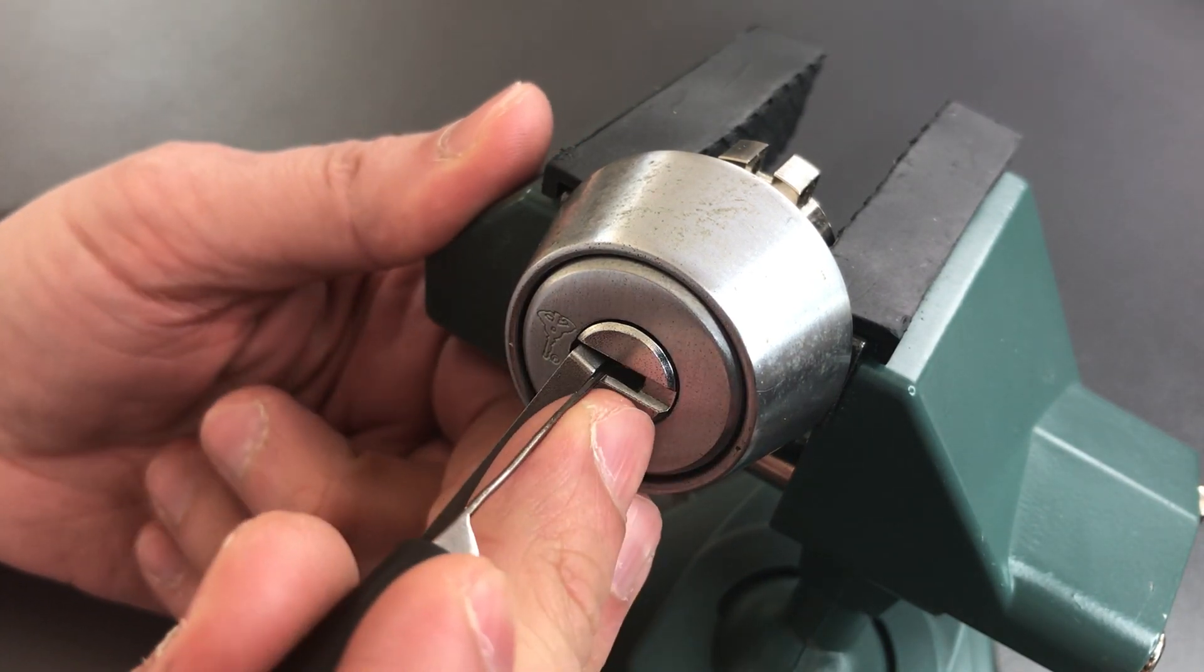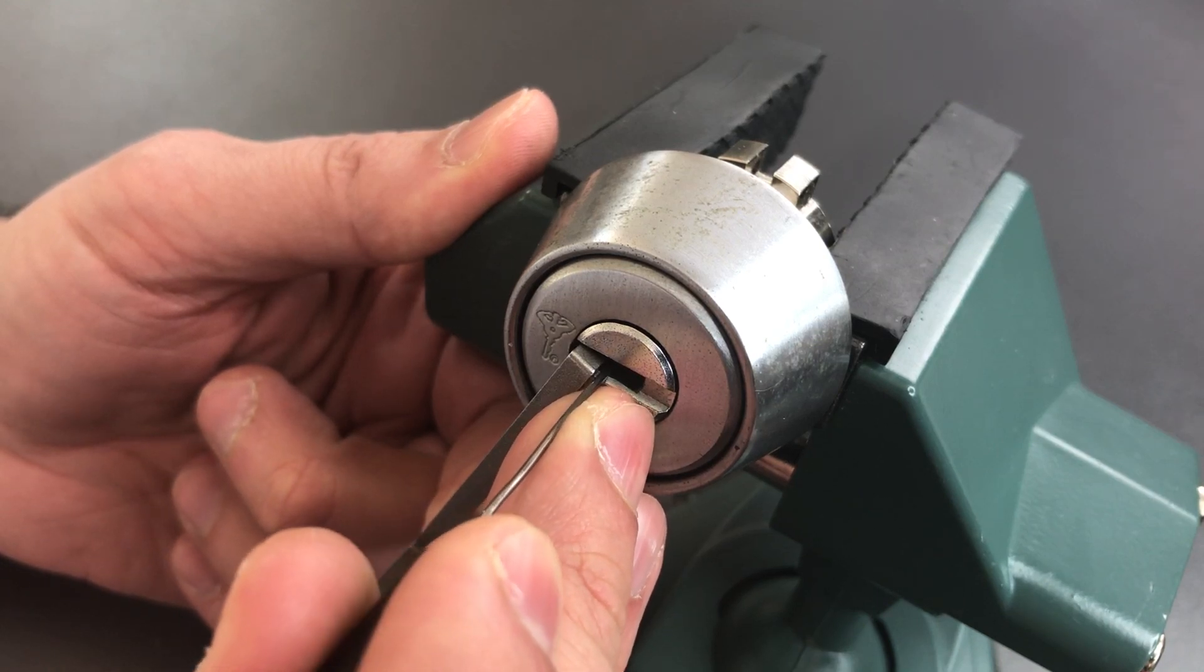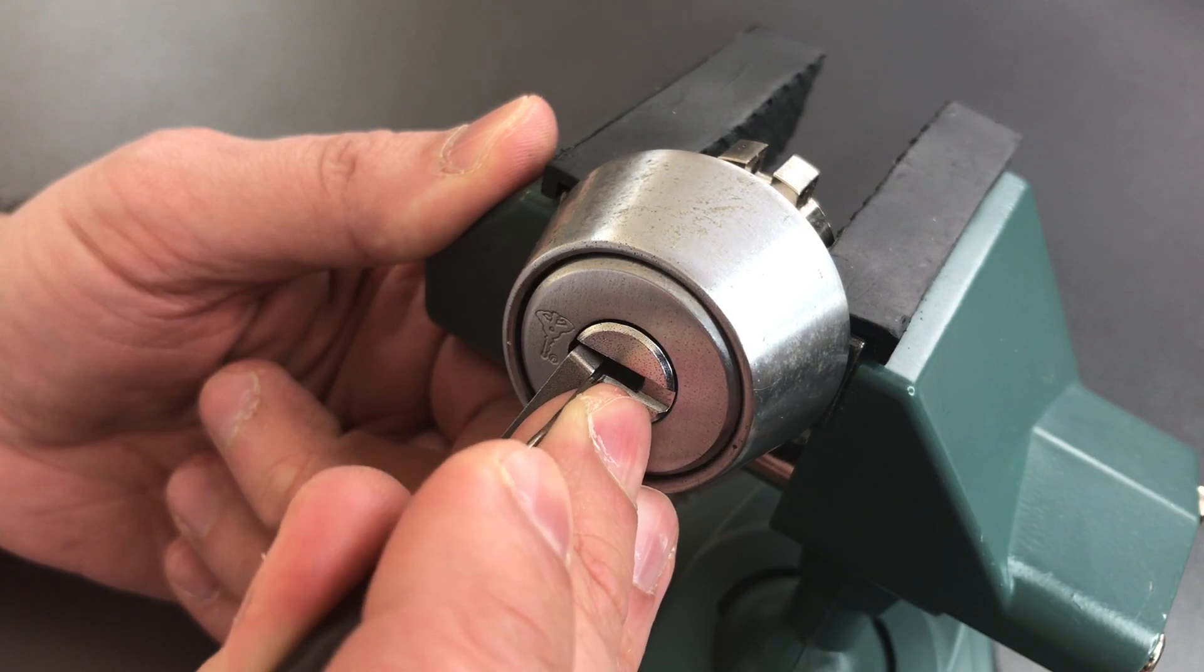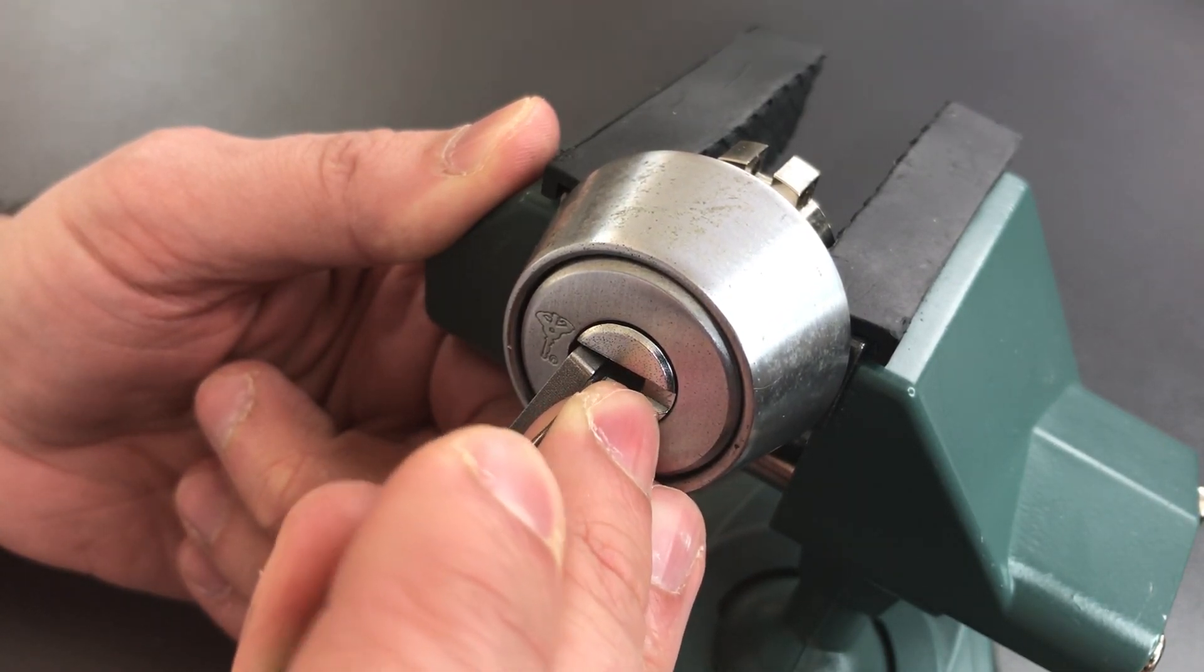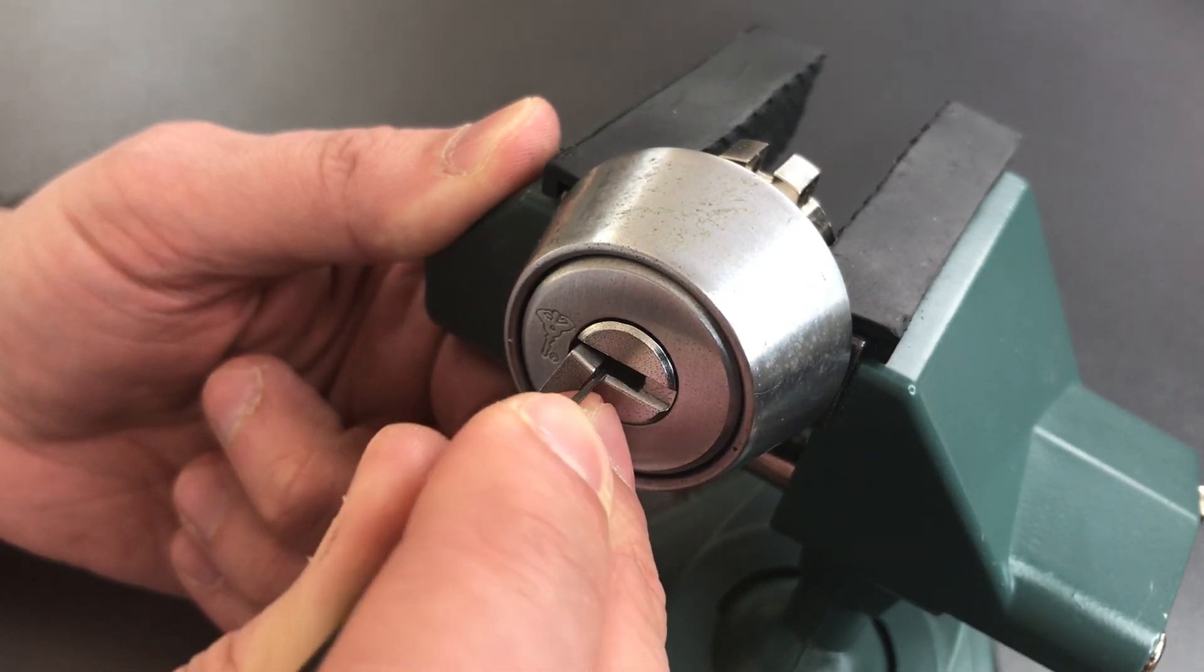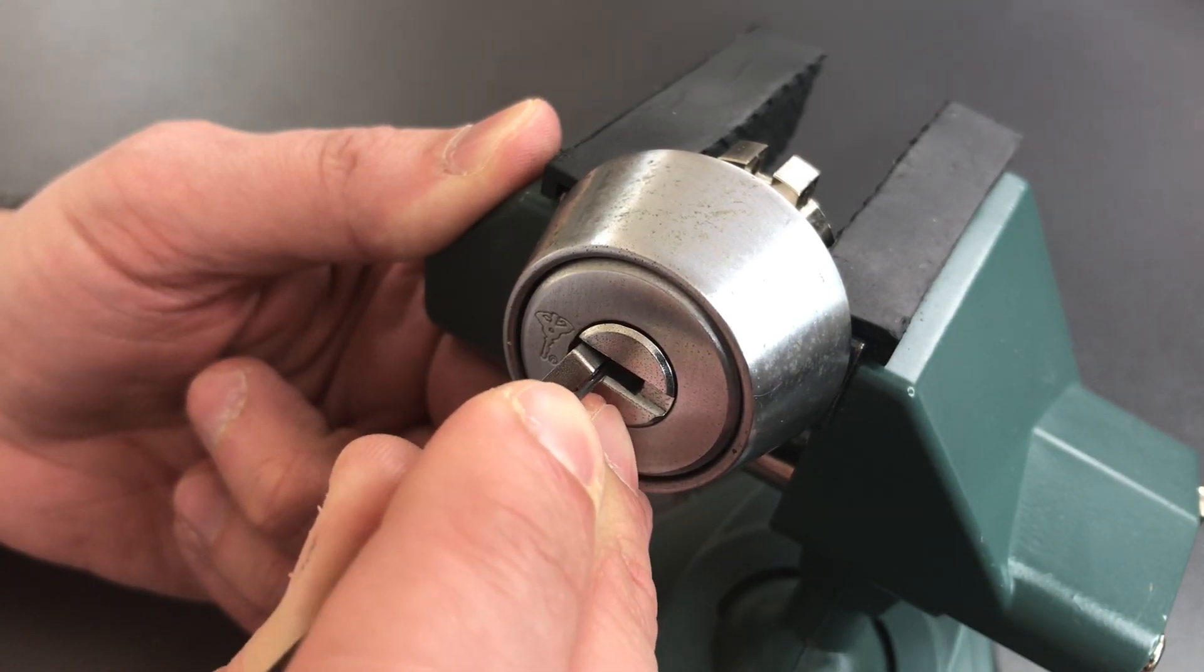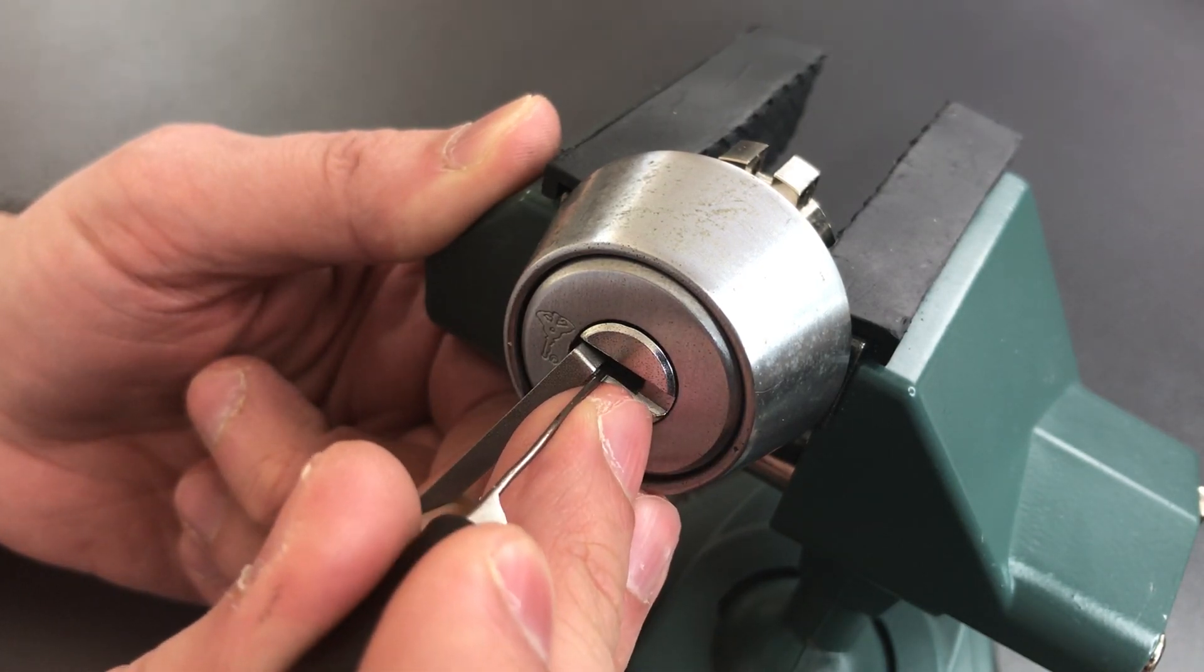Let's start picking. I am looking for binding outer pins, and I got one on number one, nothing on two, number three is binding, click there, number four, got a click out of the outer pin there, and five, binding tightly, and I clicked on that and we got a little bit of movement on the core.